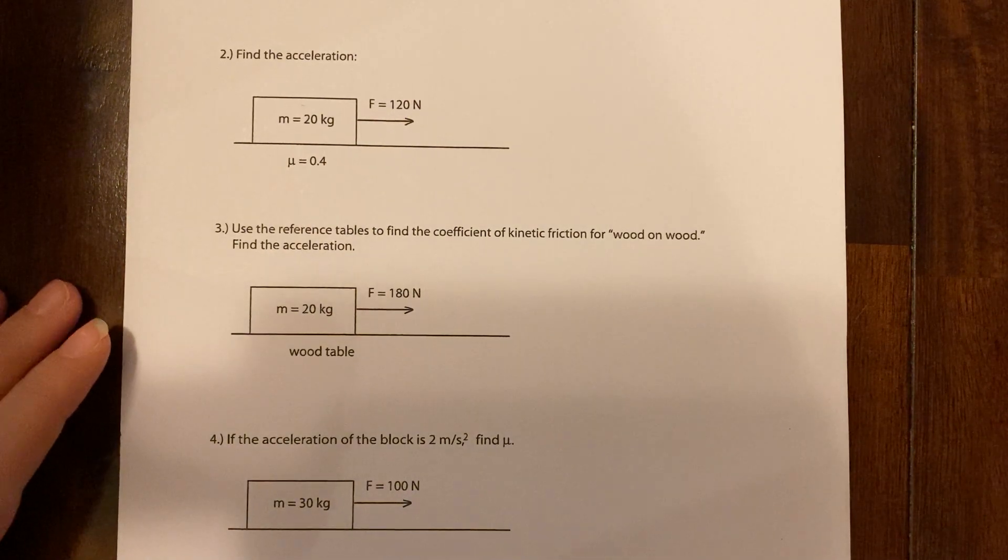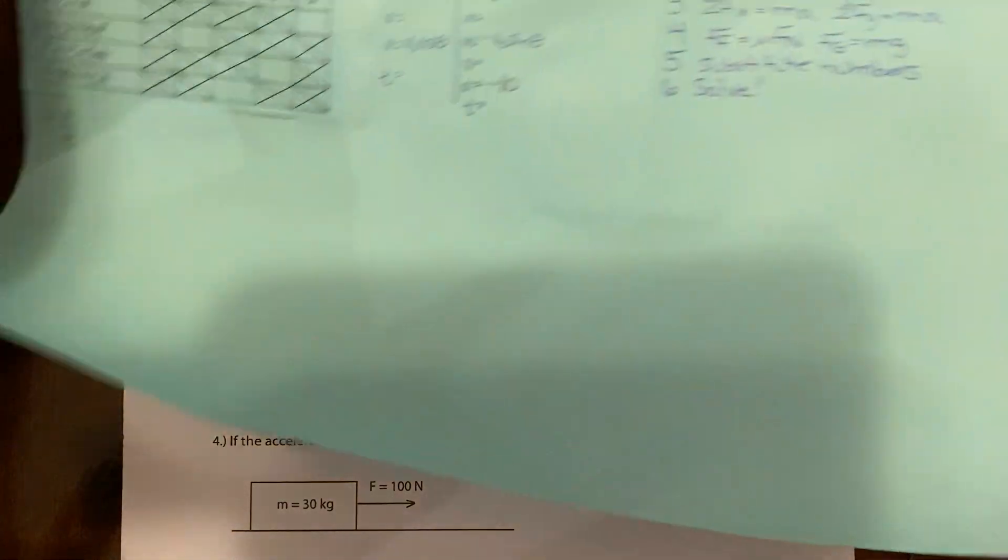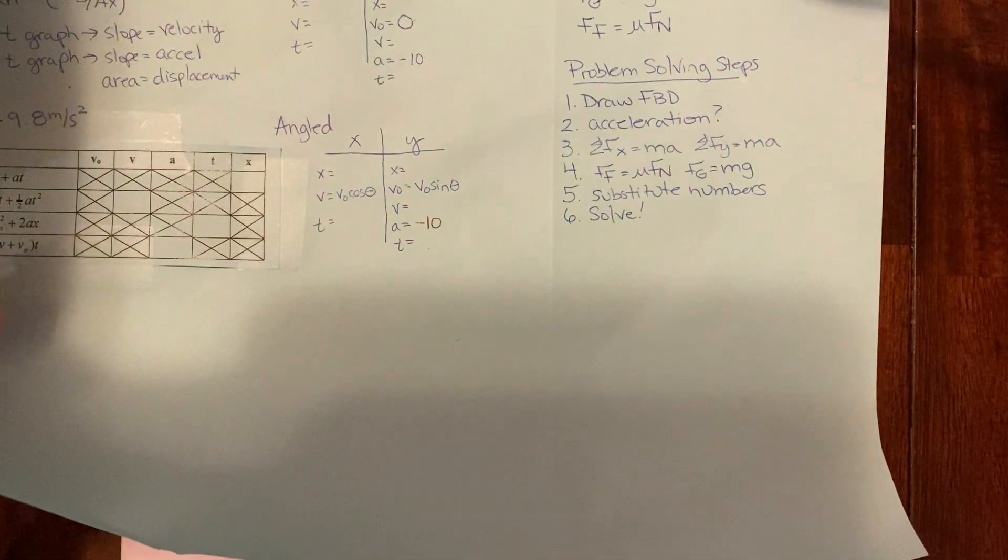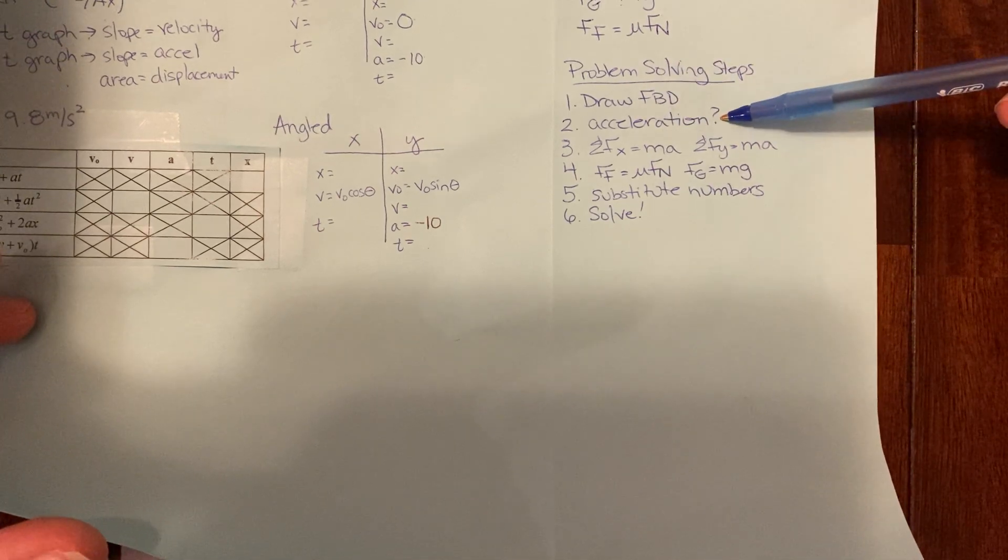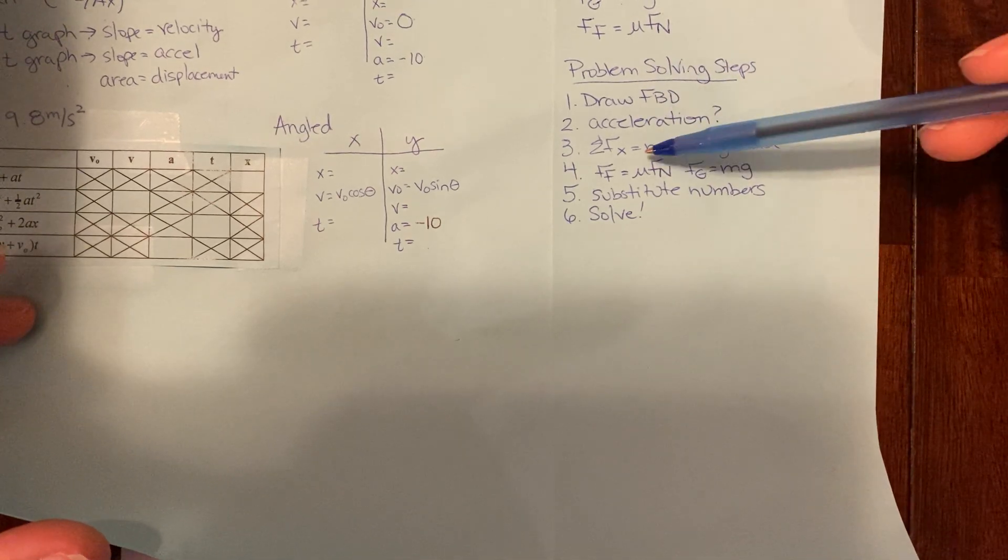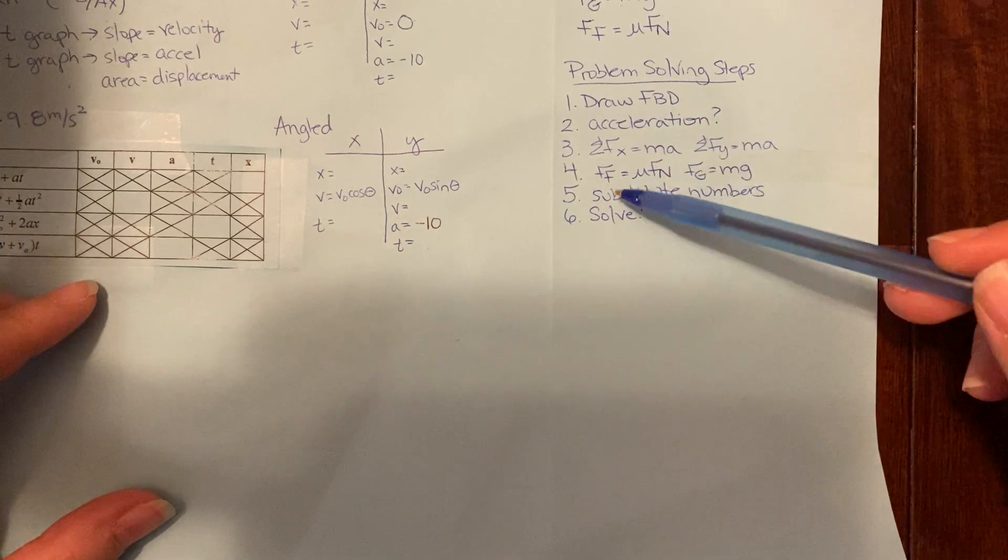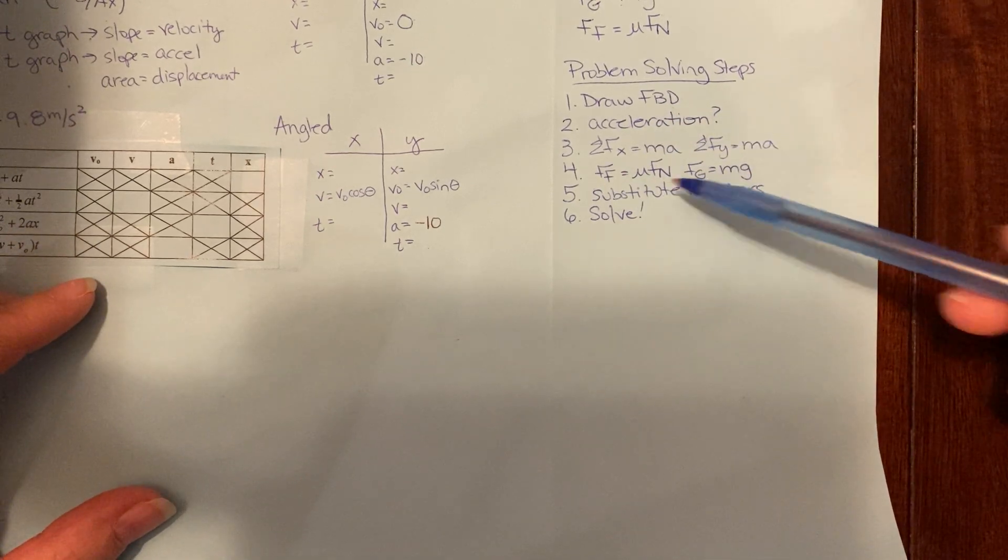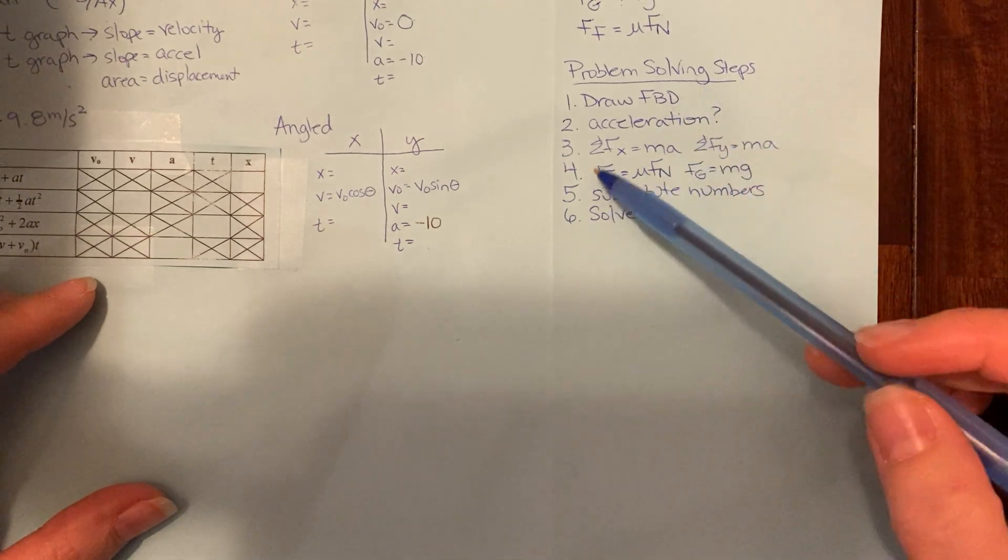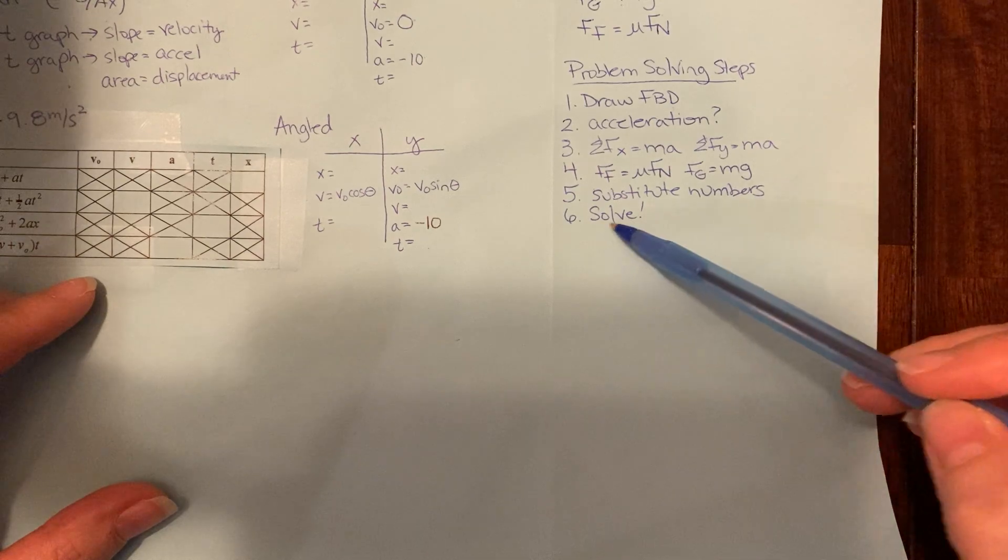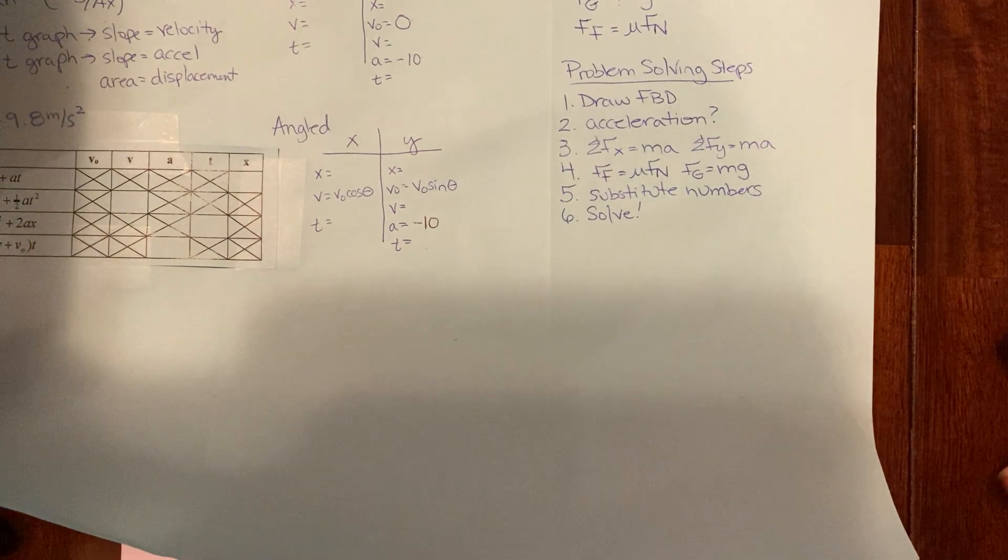Okay, here we go. So as a reminder, we have been working on the problem solving steps. First, draw a free body diagram. Ask yourself, is there acceleration. We're going to write out the sum of the forces in the x and y direction. Everywhere we see ff, we're going to plug in mu fn. Everywhere we see fg, we're going to plug in mg. Then we're going to substitute some numbers and we're going to solve. So we're actually going to solve. This is very exciting.